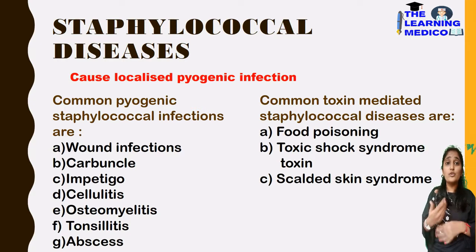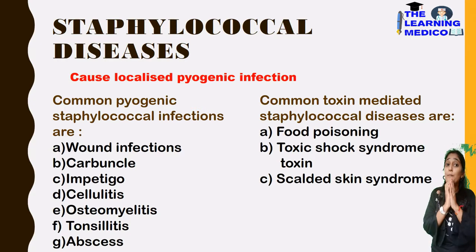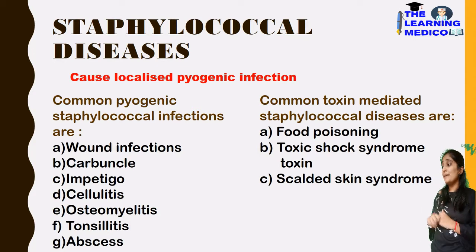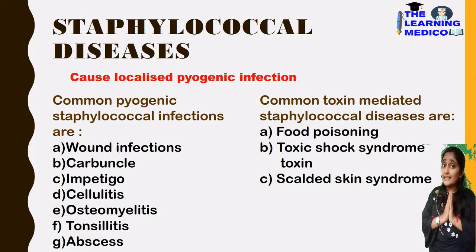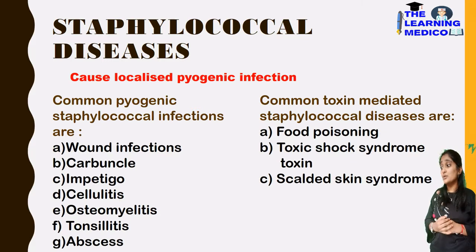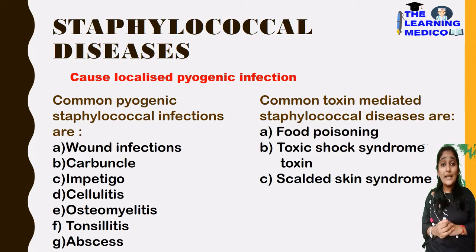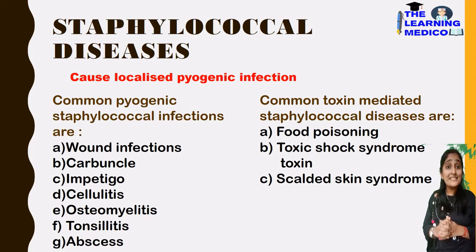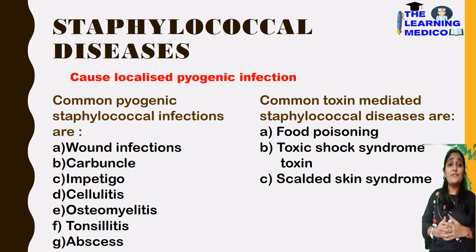Staphylococcal diseases are mainly pyogenic infections — pyogenic means pus-forming with a lot of suppuration. The main staphylococcal infections include wound infections, carbuncles, impetigo, cellulitis, osteomyelitis (itis meaning inflammation), tonsillitis, and abscess (pus formation).